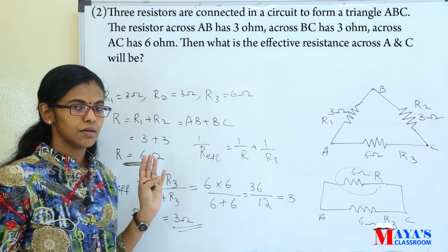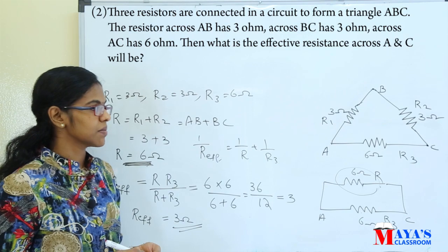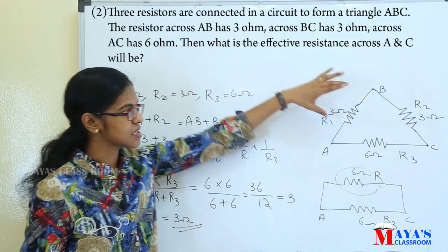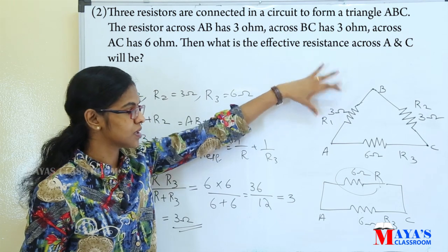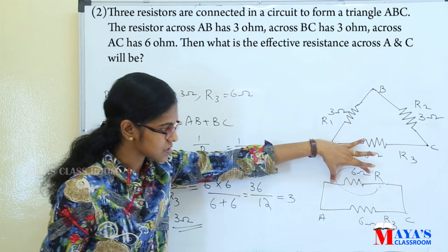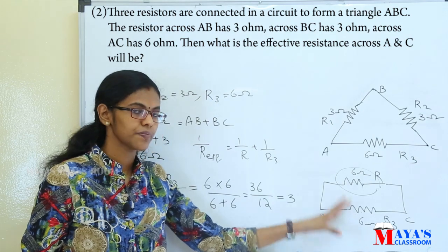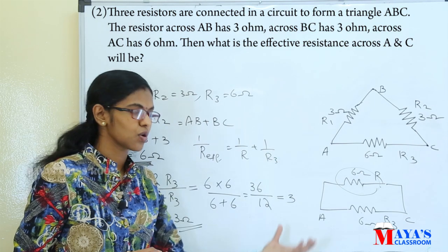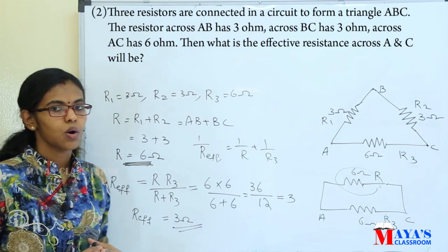Is this the effective resistance? Yes, it is clear. The effective resistance across AC is 3 ohm. We used the series combination of AB and BC to get 6 ohm, then put it in parallel with AC which is also 6 ohm, giving us a parallel combination with total resistance equal to 3 ohm.